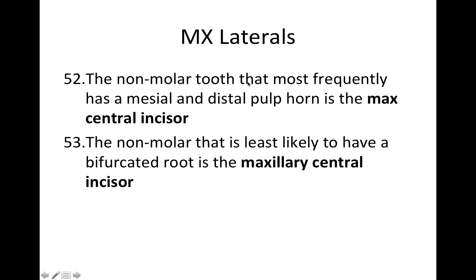The non-molar tooth that most frequently has a mesial and distal pulp horn is the maxillary central incisor. The non-molar tooth least likely to have a bifurcated root is also the maxillary central incisor, because the lateral can sometimes have two canals but the central almost never does.